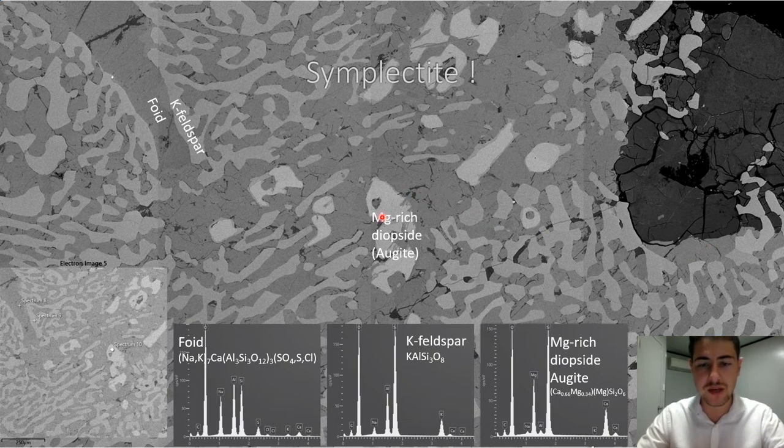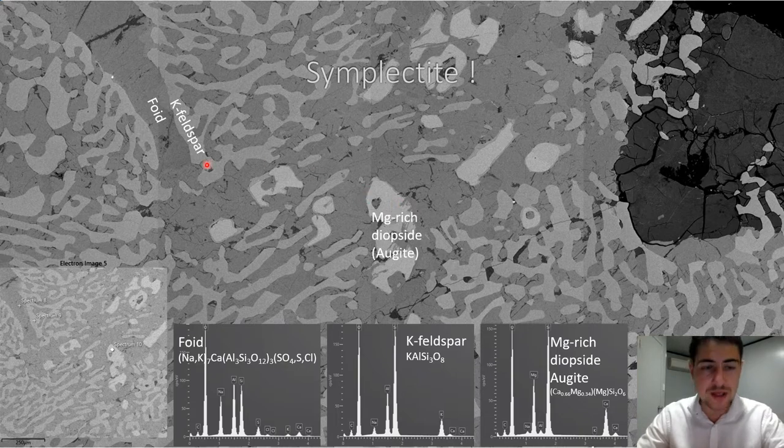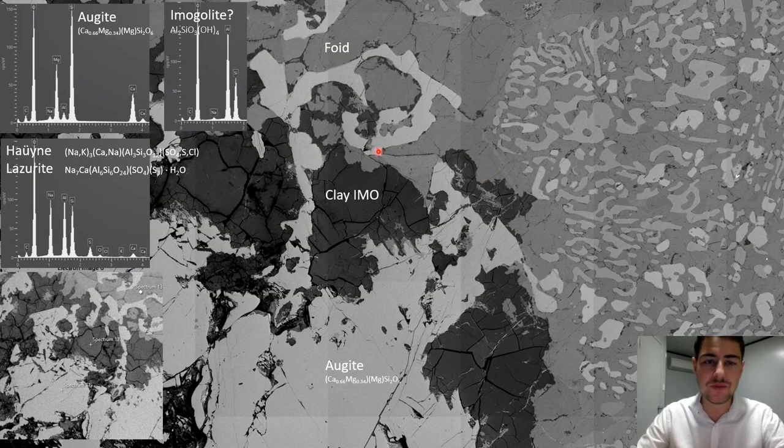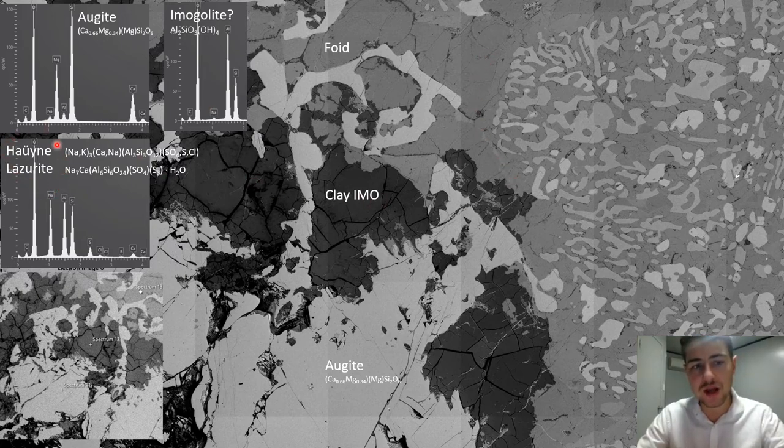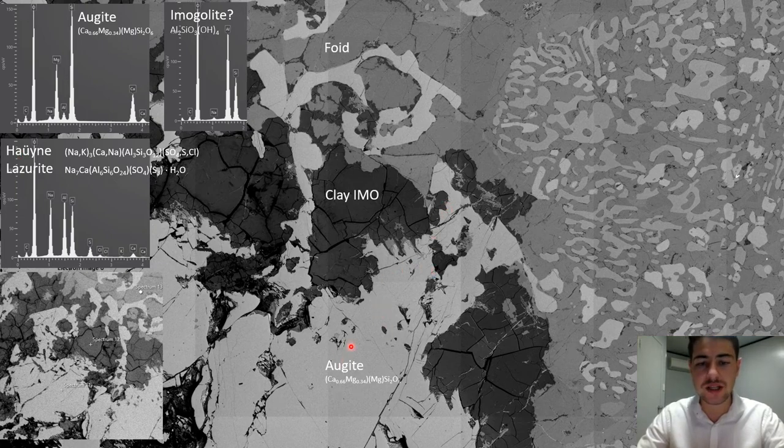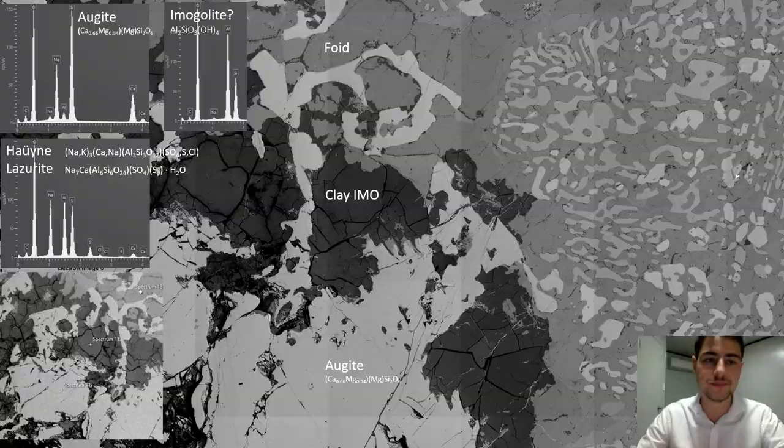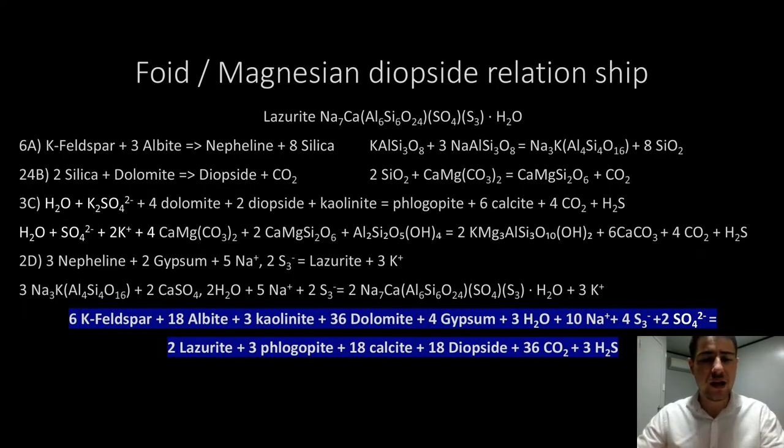Here you've got a mix of magnesium-rich diopside with a corona reacting with a feldspathoid and potassium feldspar. The potassium feldspar has been weathered into clay, likely halloysite which is aluminum and silica bearing. The feldspathoid here is actually closer to hauyne or lazurite, and we still have that augite or magnesium-rich diopside.